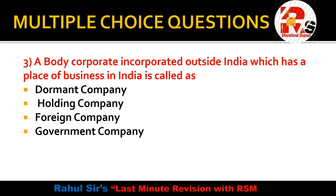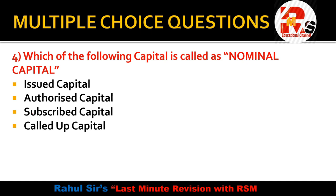Question number 3: A body corporate incorporated outside India which has a place of business in India — as per Section 2(14) — is called what? Options are: dormant company, holding company, foreign company, or government company. Since it is established outside India but has a place of business in India, the right answer is foreign company.